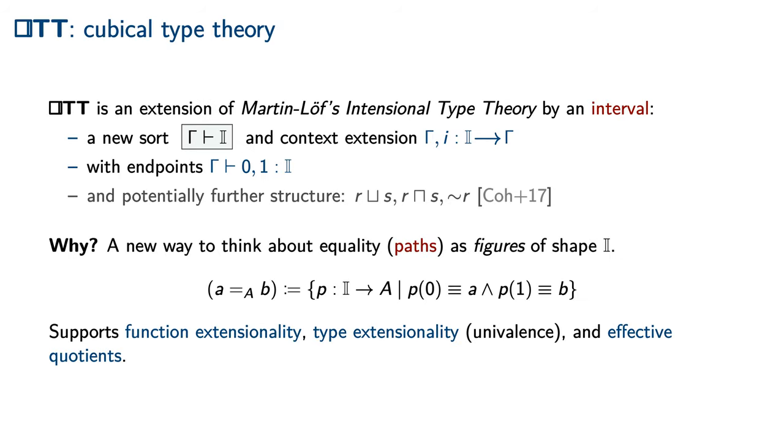Cubical Type Theory is an extension of Martin-Löf's Intensional Type Theory, or ITT, by an interval. An interval consists of a new sort called I, by which the context can be extended. One has two constants, 0 and 1, of interval sort, called the endpoints.